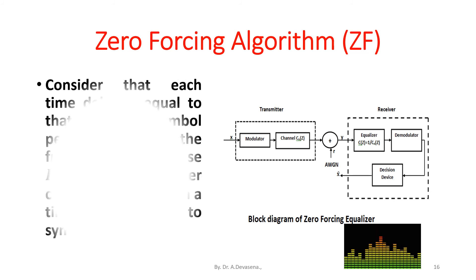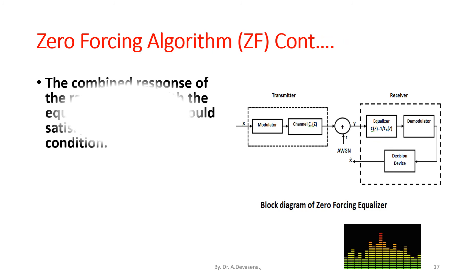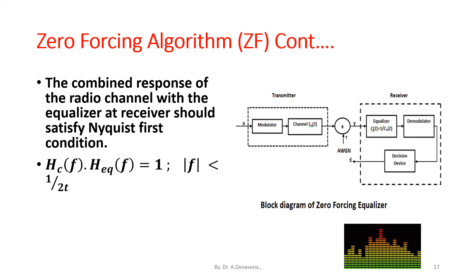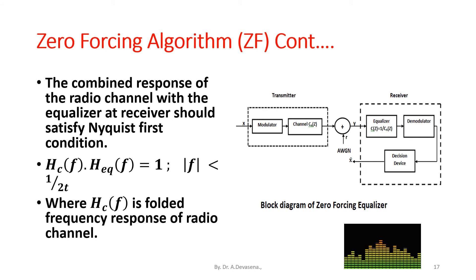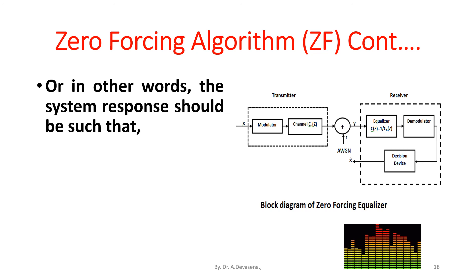By increasing the number of coefficients without limit, an infinite-length equalizer with zero inter-symbol interference can be achieved. However, the main drawback of the zero forcing equalizer is noise enhancement. A block diagram of the zero forcing equalizer is presented here. Each time delay equals the symbol period T; the frequency response H_eq(f) of the equalizer is periodic with period equal to the symbol rate 1/T. The combined response of the radio channel with the equalizer should satisfy the Nyquist first condition: H_c(f) × H_eq(f) = 1 for |f| < 1/(2T), where H_c(f) is the folded frequency response of the radio channel.